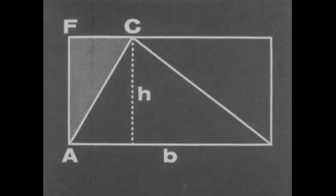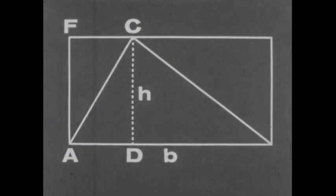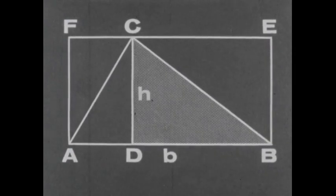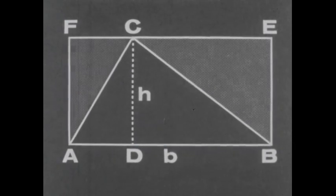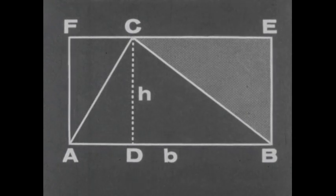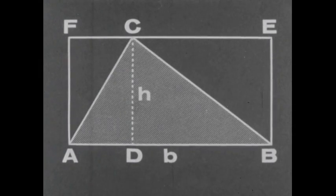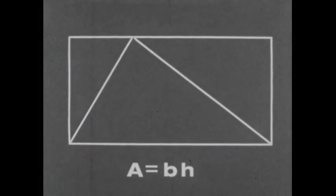We see that triangle AFC is congruent to ADC. We know that these two congruent triangles are equal in area. In like manner, triangle CBE is congruent to CDB. Thus, triangle AFC and triangle CBE together are equal in area to our original triangle ACB. We know that the area of a rectangle equals the base times the height, so one half the base times the height must equal the area of a triangle.